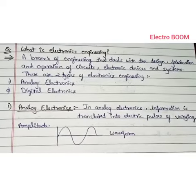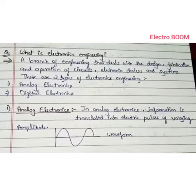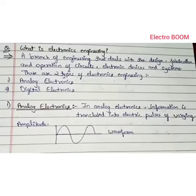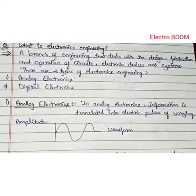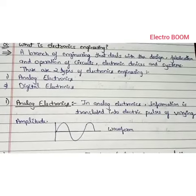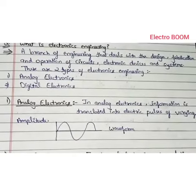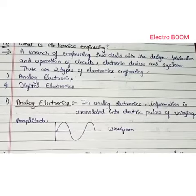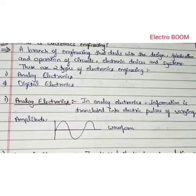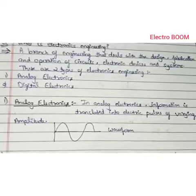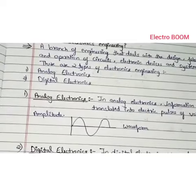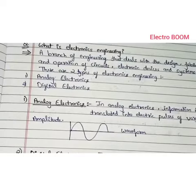Now let us see our first type: Analog Electronics. In Analog Electronics, information is translated into waveforms or electric pulses of varying amplitude.